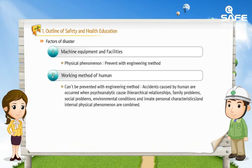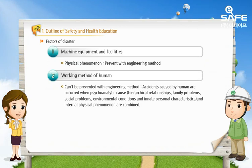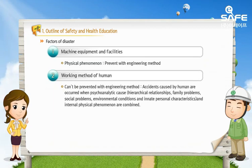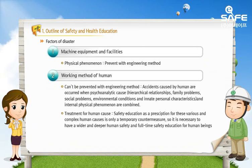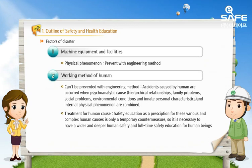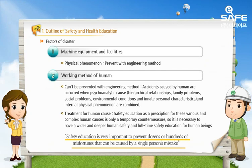Furthermore, many human causes have psychoanalytical reasons which lead to thinking against the free will of human beings in combination with physical phenomena. Human causes are not merely caused by human motivations, but by hierarchical relationships, family problems, social problems, environmental conditions, and innate personal characteristics. Safety education as a prescription for these various and complex human causes is only a temporary measure, so it is necessary to have wider and deeper safety education. Especially, safety education is very important to prevent dozens and hundreds of misfortunes that can be caused by a single person's mistake.